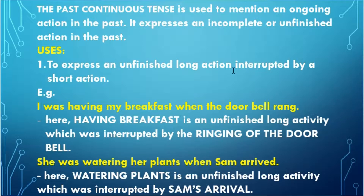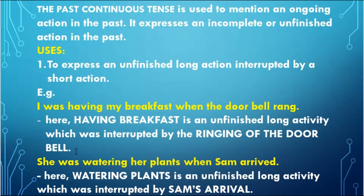It is used to express an unfinished long action that is interrupted by a short action. So we are going to mention two actions in a single sentence. One will take the past continuous form. Look at the example: 'I was having my breakfast when the door bell rang.' Here you can see two actions. One is having breakfast — an unfinished long activity — interrupted by the ringing of the door bell. Having breakfast is in past continuous, and the door bell rang is in simple past tense.